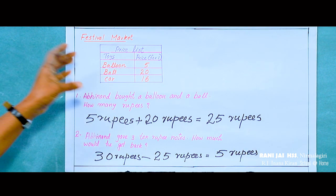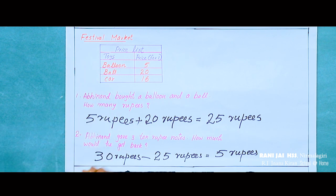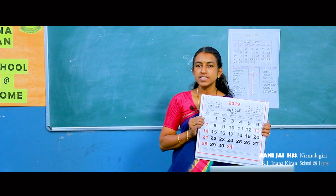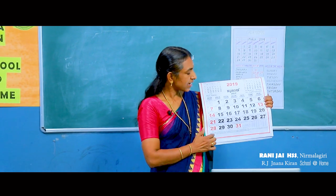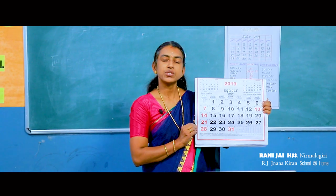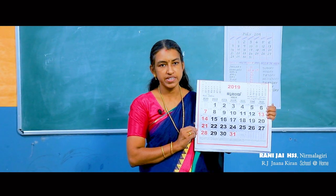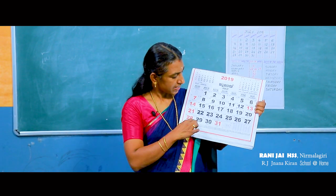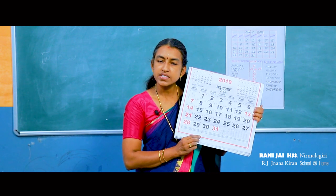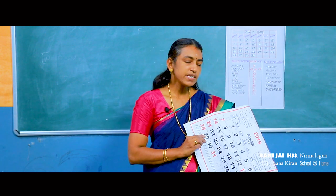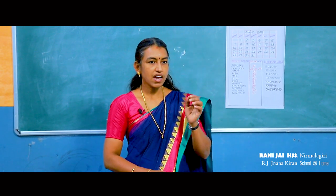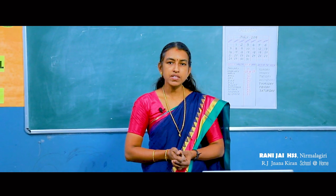All of you write this price list and these questions in your notebook. Children, have you ever seen a calendar? Yes — this is the calendar of July 2019. How many days in July? There are 31 days in July. How many months in a year? Yes, there are 12 months in a year. Which are the 12 months?